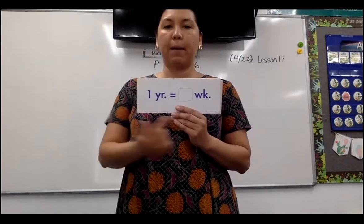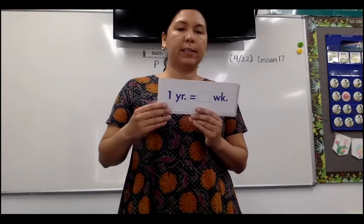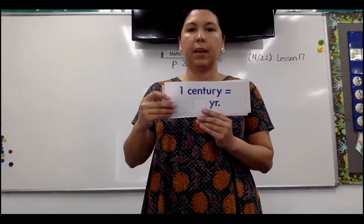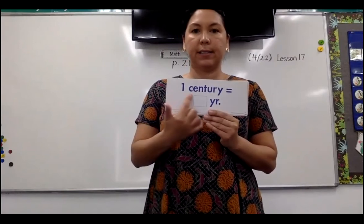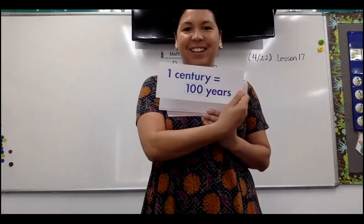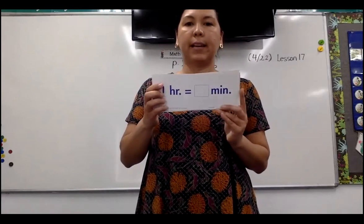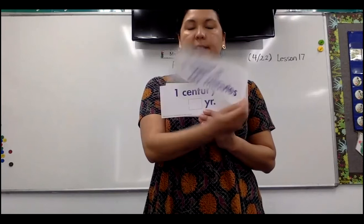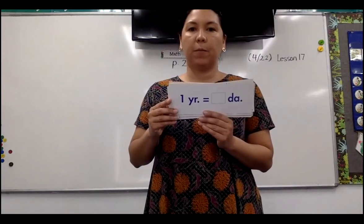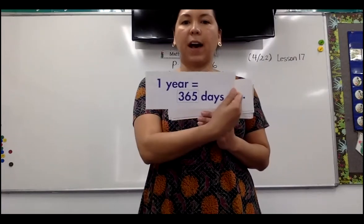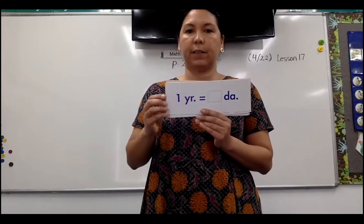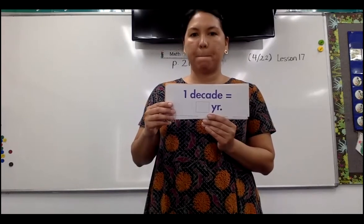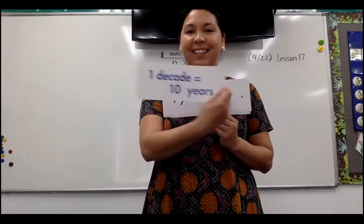Now let's go to time. How many weeks in a year? We have our calendar over there. About 52 weeks. How many years in a century? 'Cent' — what does cent mean? A hundred. How many minutes in an hour? Same as seconds in a minute — 60 minutes in an hour. How many days in a year? 365. A leap year would be 366; regular year 365. How many years in a decade? 'Dec' means ten — ten years in a decade. That was our warm-up.